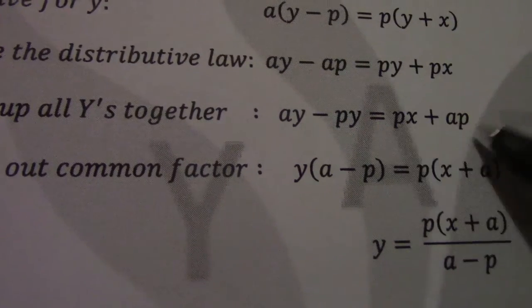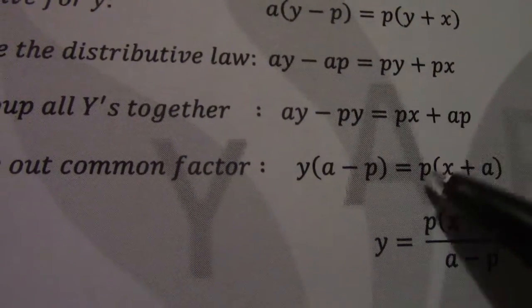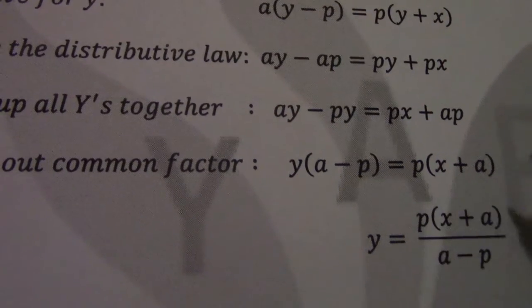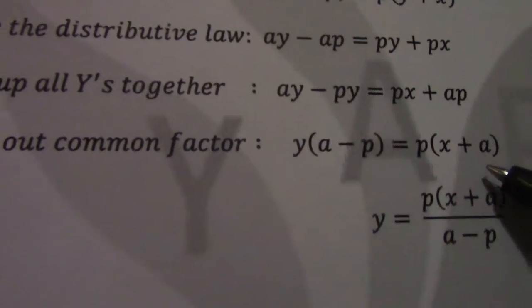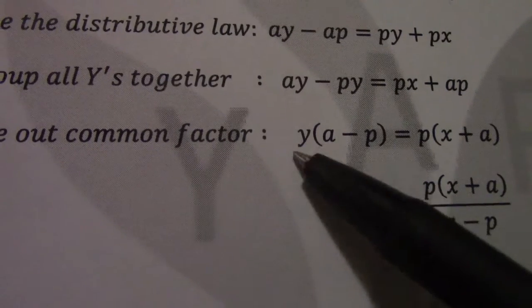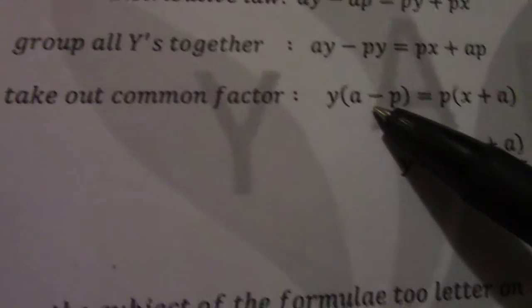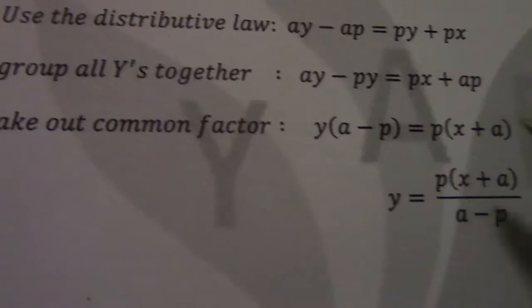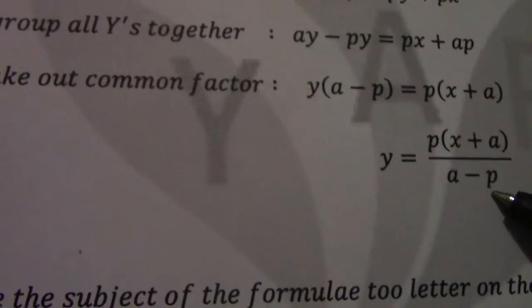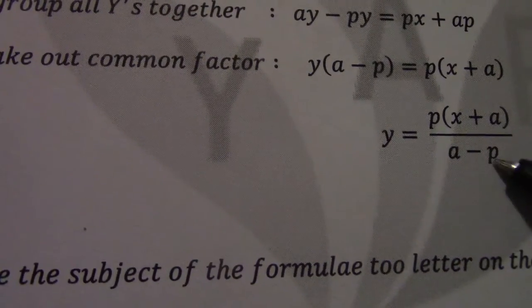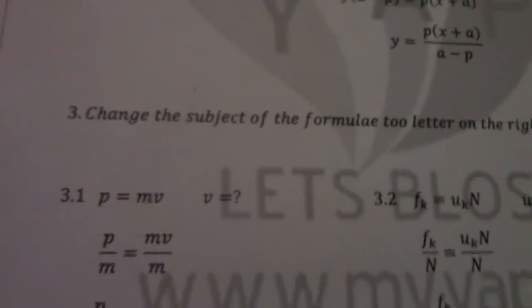Here I can also take out p as a common factor. Px divided by p leaves behind x. Positive ap divided by p leaves behind a. I want y on its own, so this means y times that bracket. So to get rid of this bracket I need to divide. So therefore I divide by a minus p. So that gives me px plus a divided by a minus p.